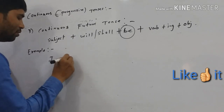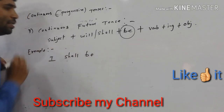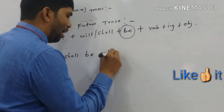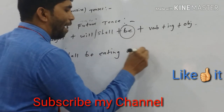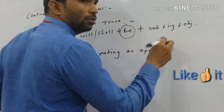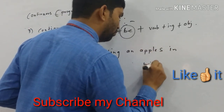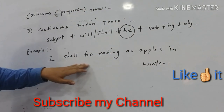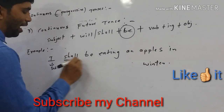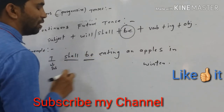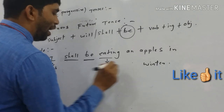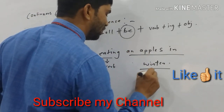Let's take one example. 'I shall be eating an apple in winter.' Here, 'I' is the subject, 'shall' is compulsory, 'be' is also compulsory, 'eat' is the verb so we use 'ing' to make 'eating', and 'apple in winter' is the object.